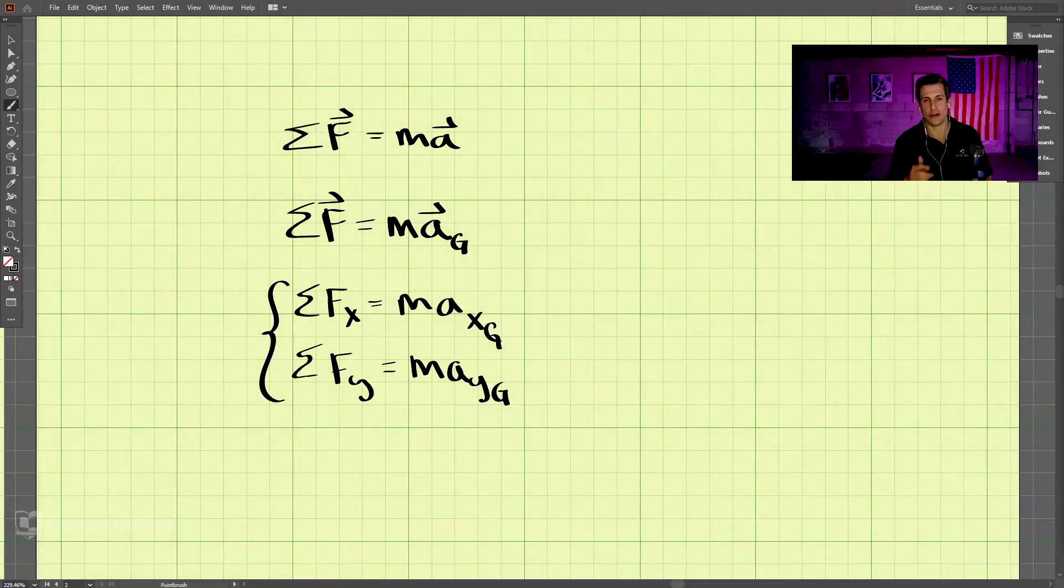And now, because we're dealing with rigid bodies, we'll add one more equation. So remember from statics, we used the sum of the moments is equal to zero. But now, let's take the case where things are rotating.